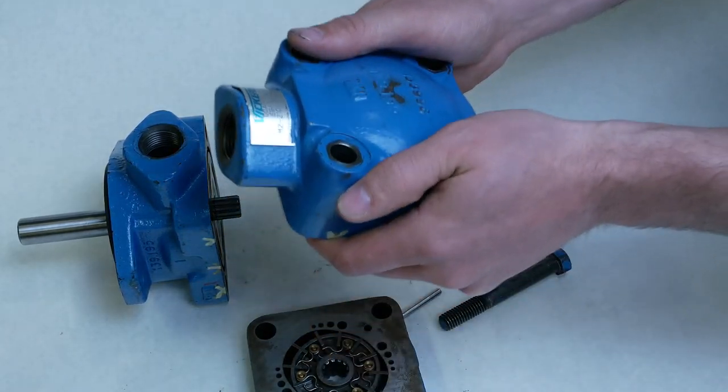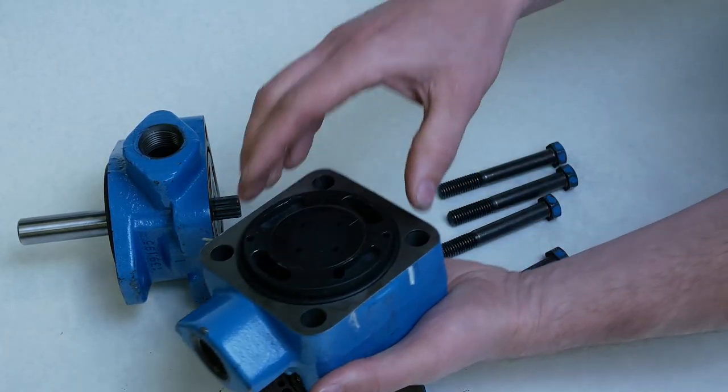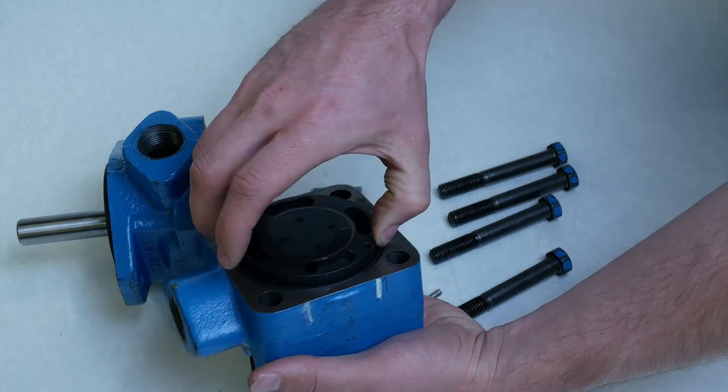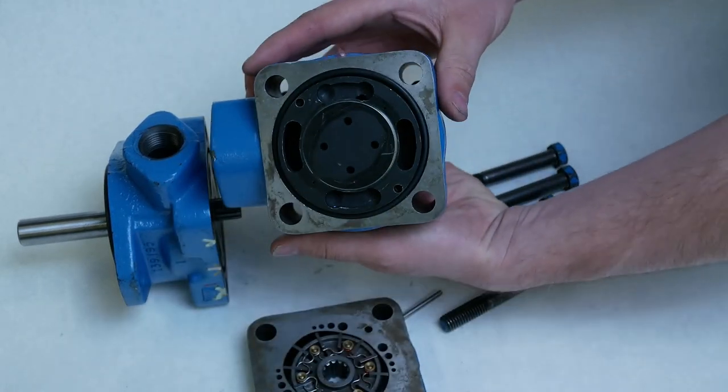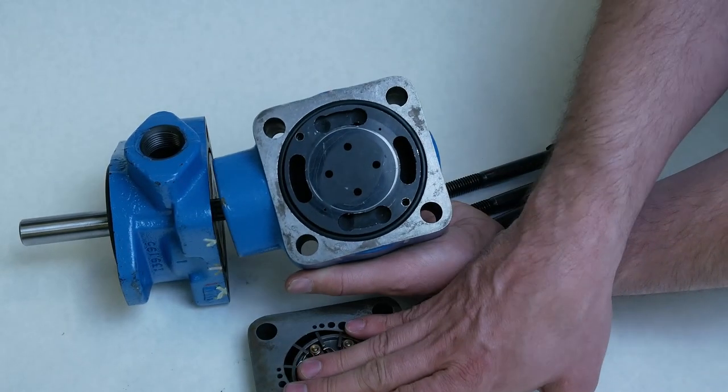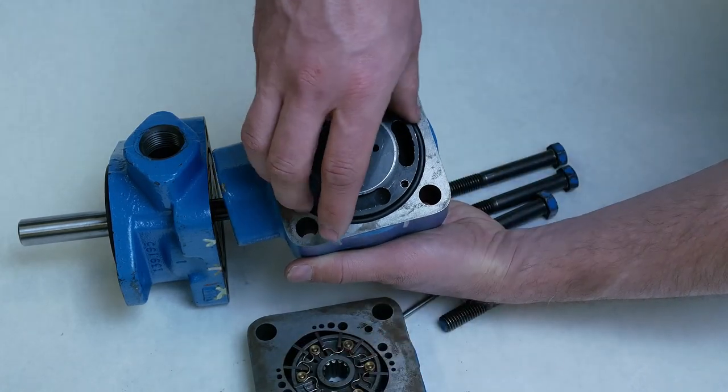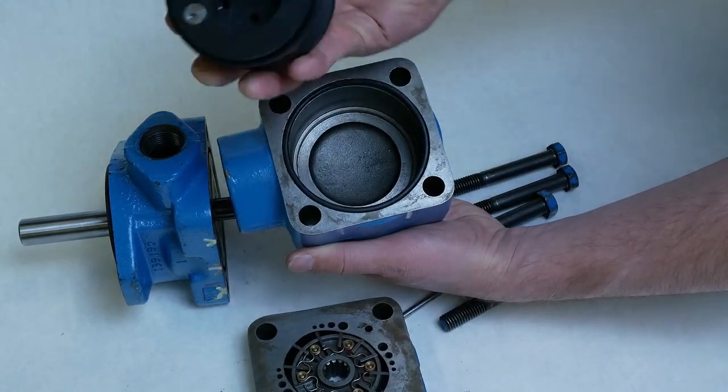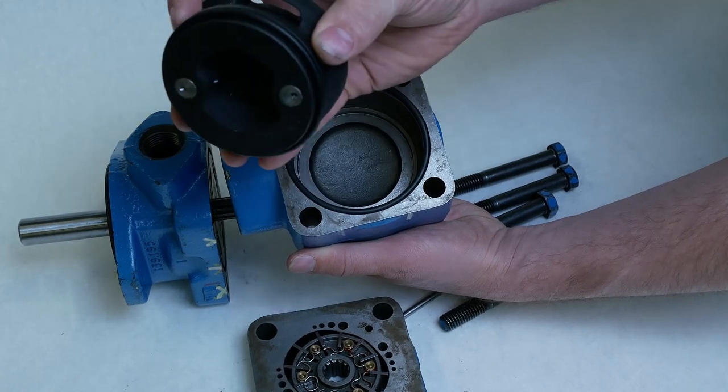So just sort of tapped it to get those parts out of there and what we can see is that this pressure plate that would be sandwiched against the center housing and against the rotor is there for volumetric efficiency and we can see that sealing surface right there.